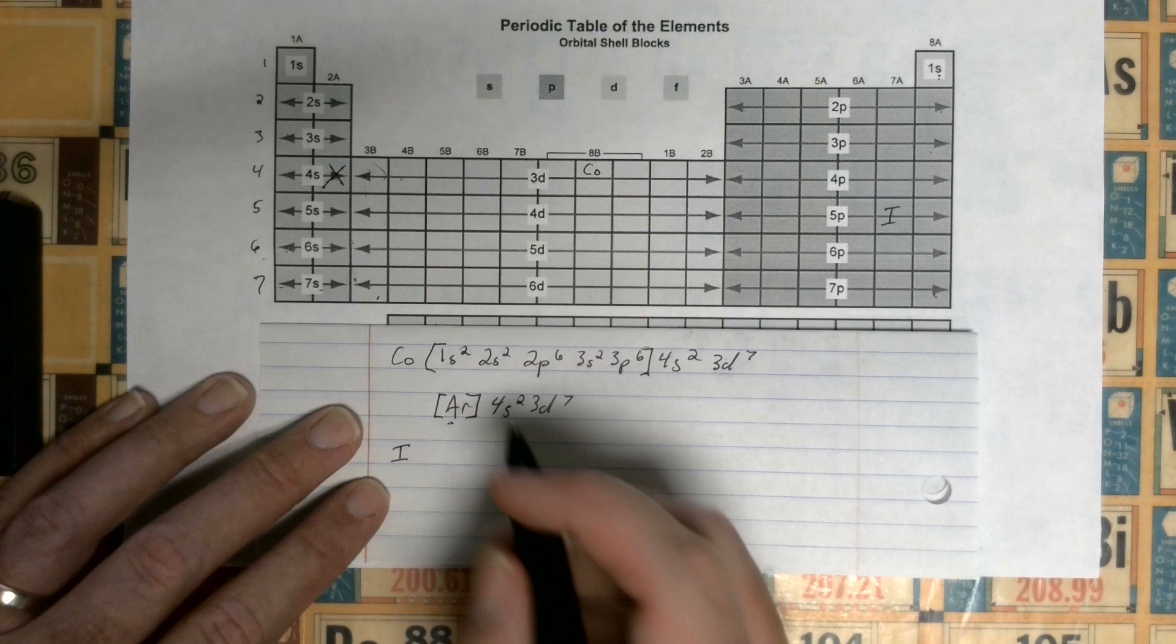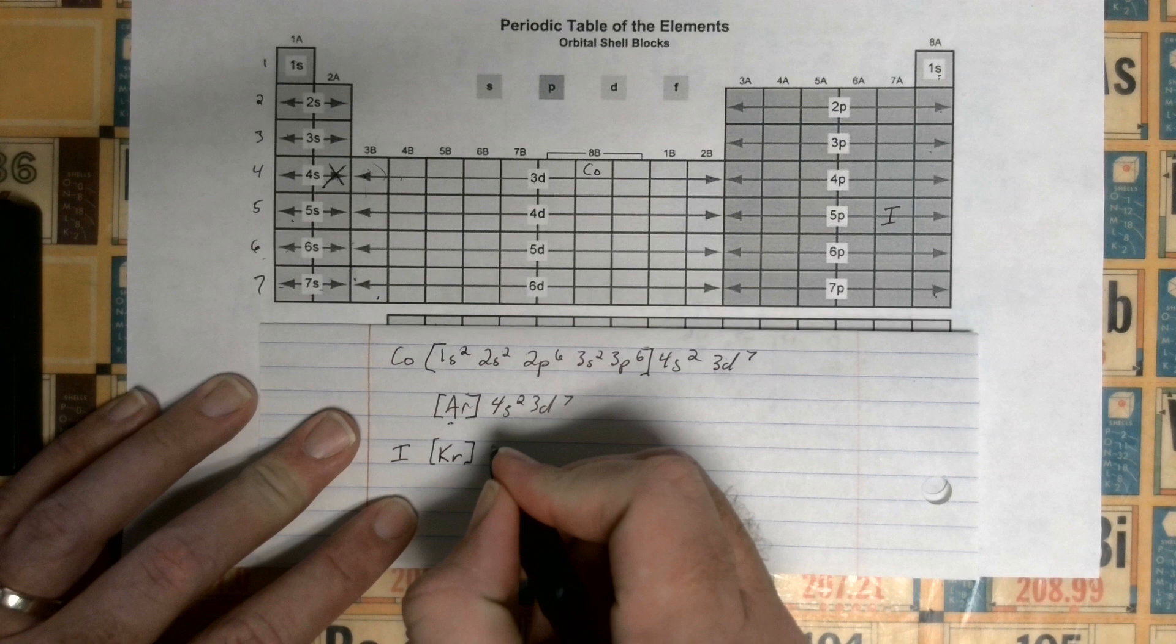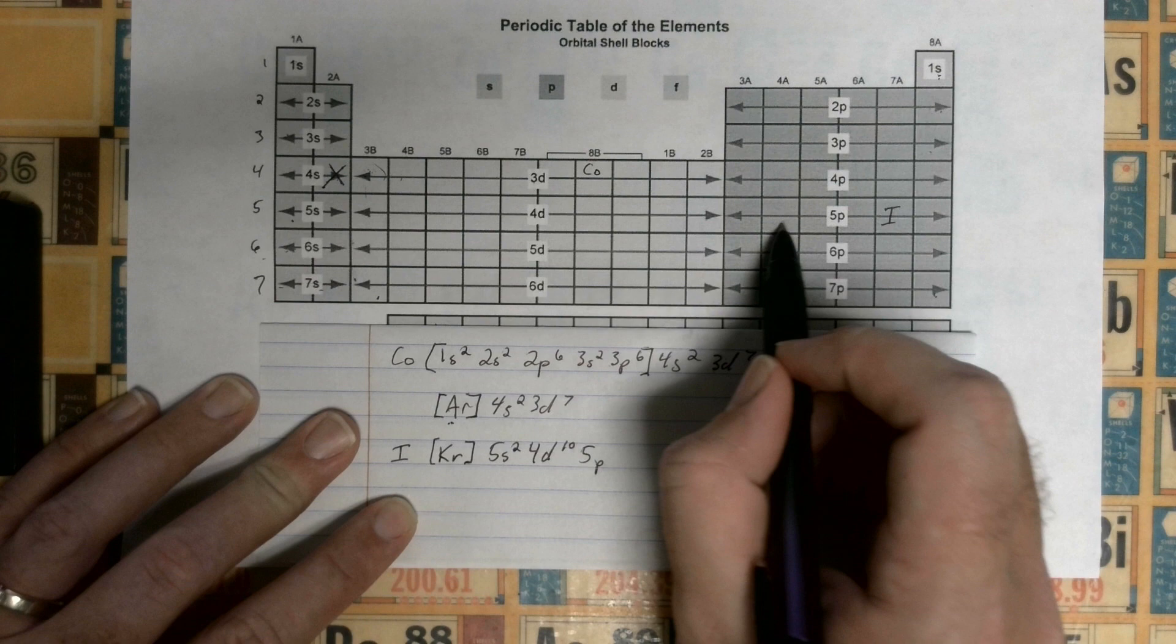And then we start from the next row, so Krypton ends in the fourth row, so we go to 5s2, and then we're going to go 4d10, and then 5p5.